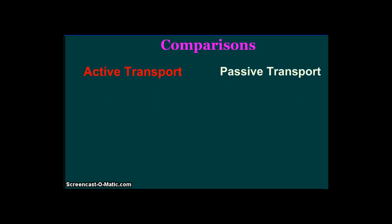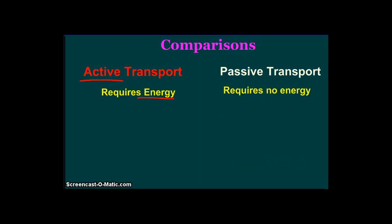Active and passive transport are different in one critical way. Active transport requires energy — makes sense, we see the word active and energy. Passive transport then requires, I hope you guessed, no energy. Passive transport happens on its own and does not require any extra energy from the cell.